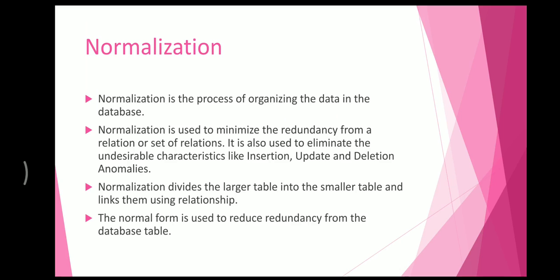Normalization is a process of organizing the data in the database. It is used to minimize the redundancy from a relation or a set of relations. It is also used to eliminate undesirable characteristics like insertion, update, and deletion anomalies. Normalization divides the larger table into smaller tables and links them using relationships. The normal form is used to reduce redundancy from the database table.